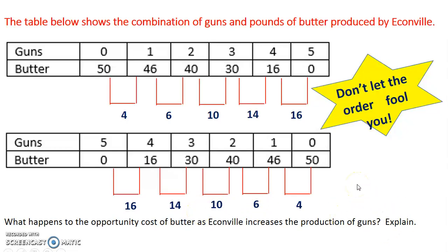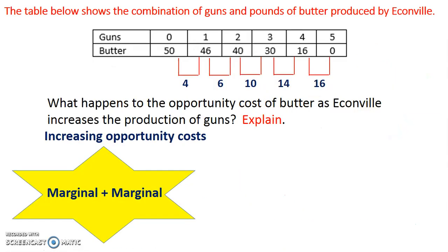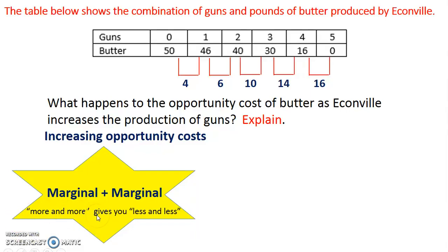Now it comes time to be able to explain increasing opportunity costs. I'm going to give you four different ways to think about how to explain it. No matter what, whenever talking about opportunity costs in this way, I need to talk about marginal analysis twice — marginal and marginal. One way to state this is that as you make more and more guns, you're getting less and less butter because the change is getting larger and larger. You can't just say as you produce more you get less — that's not enough because it's not saying marginal.